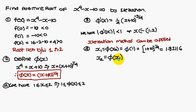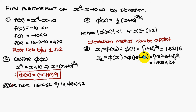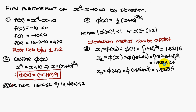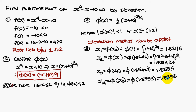Now x2 formula is phi of x1, where x1 is 1.82116. Therefore, this is phi of 1.82116. Substituting this value in the phi of x function, you will get 1.85423. Similarly, x3 is equal to phi of x2, where x2 is 1.85423. Simplifying, you get 1.8555. Similarly, x4 is equal to phi of x3, and it is also 1.8555. Therefore, the approximate root is 1.8555.